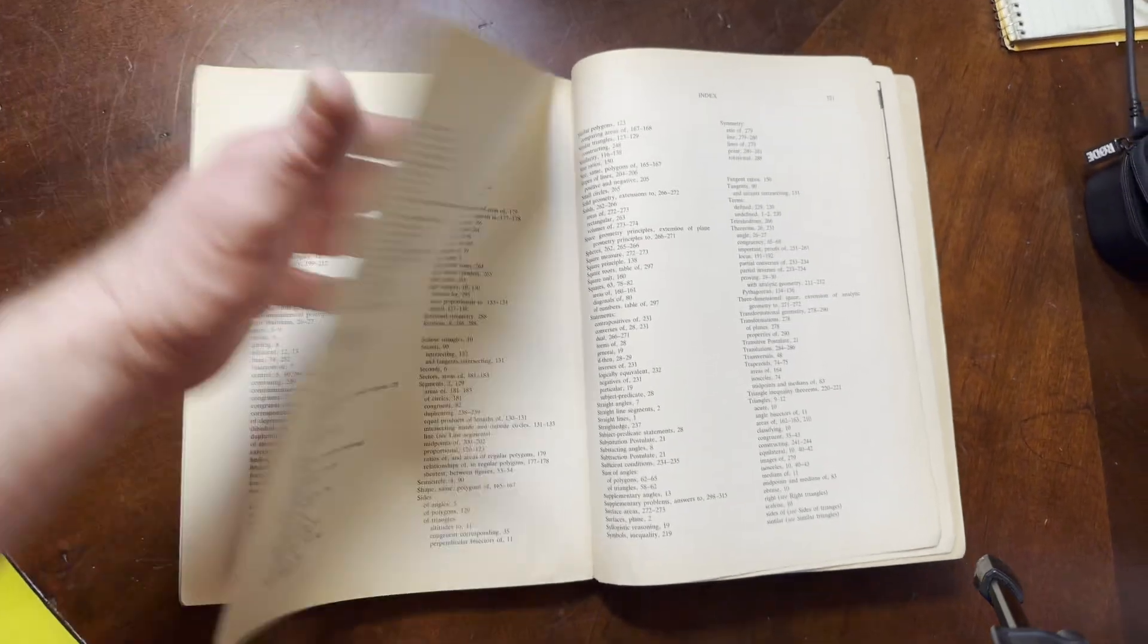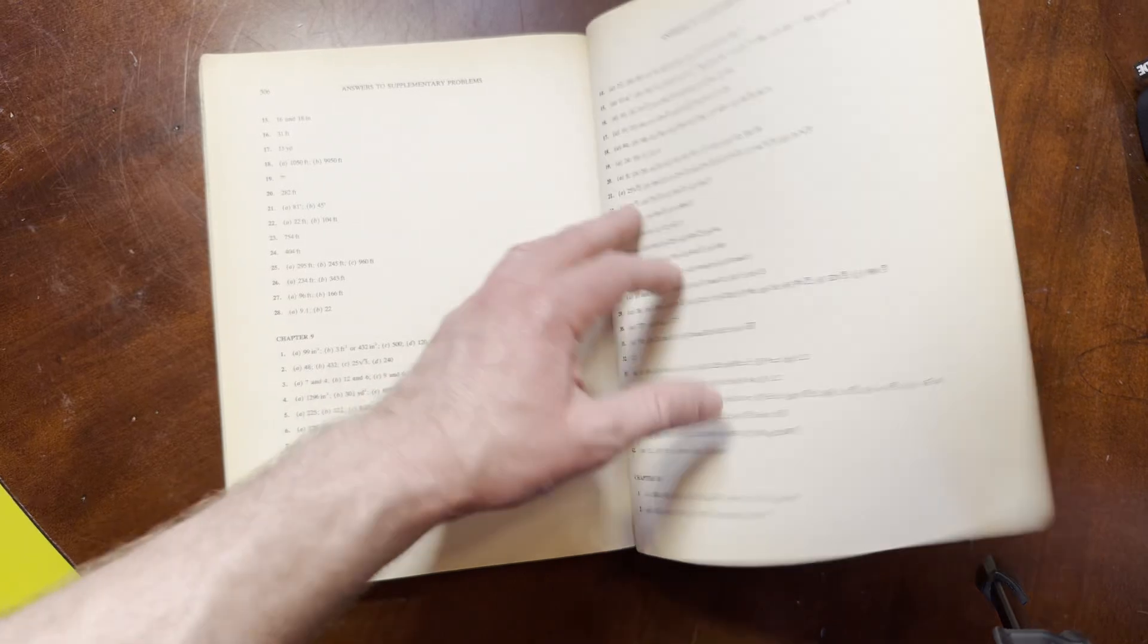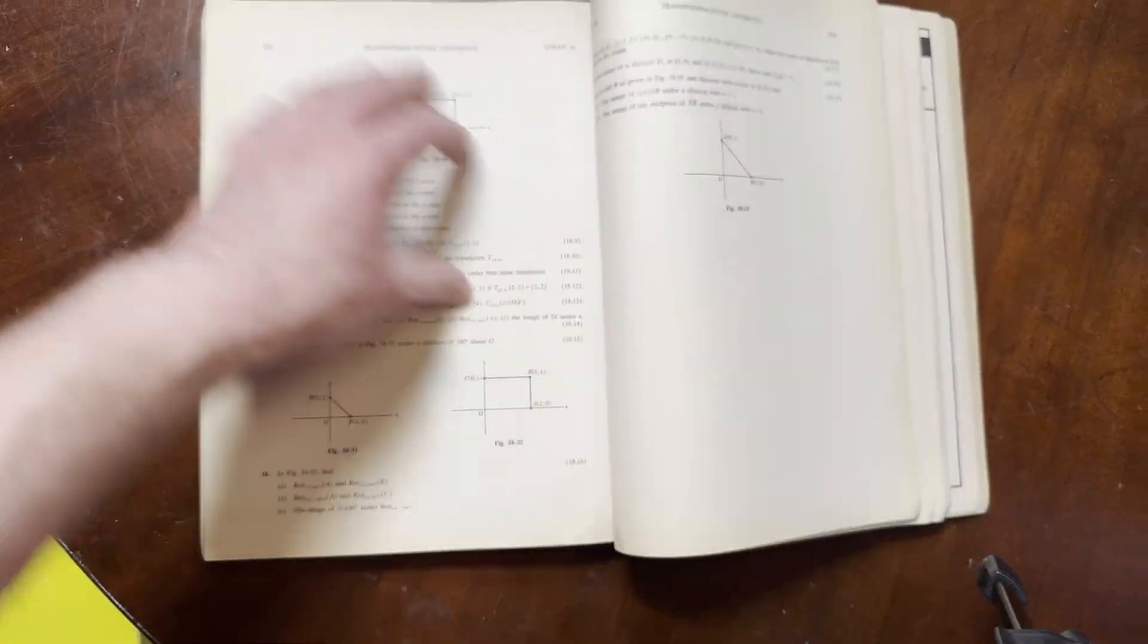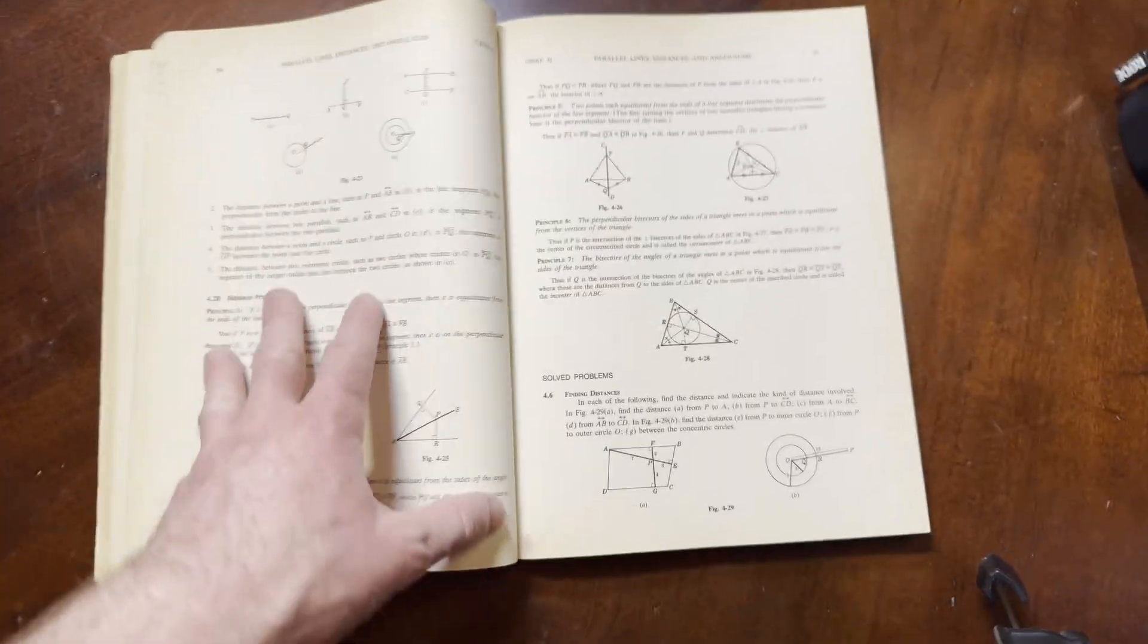Here's the index. You can see that. And here are the answers to the supplementary problems, which we saw earlier. So you do get answers to those in the back of the book. Most of the Schaum's are pretty similar. This one's a little bit different than some of the other ones I've looked at. Most of them are pretty similar in layout.